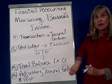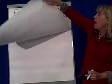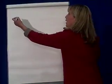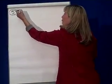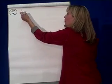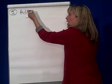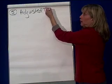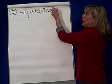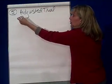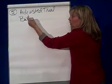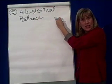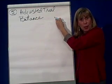Since we're making adjusting journal entries and posting them to the ledger, the next thing we do in step five is prepare an adjusted trial balance. All that adjusted trial balance proves is that you copied debits as debits and credits as credits.